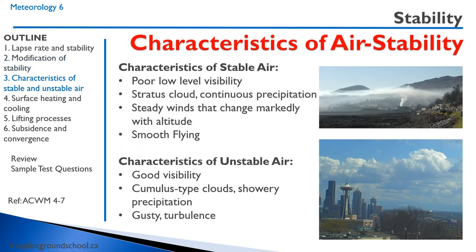Here are some characteristics of air in relation to stability and instability. The characteristics of stable air are poor low-level visibility, stratus cloud, continuous precipitation, steady winds that change markedly with altitude, and smooth flying conditions. Often when there's fog, the air will be very stable. Unstable air, on the other hand, generally has good visibility with cumulus-type clouds and showery precipitation. It also tends to be gusty and turbulent.